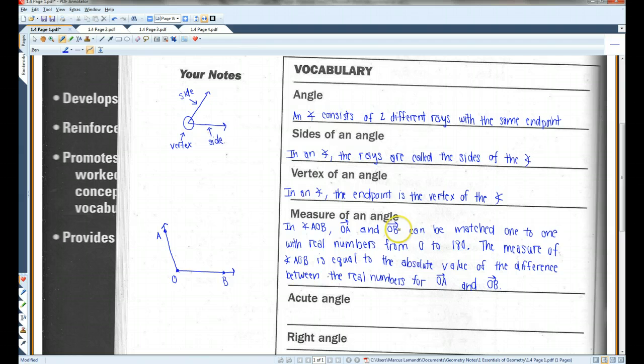Rays OA and OB can be matched one to one with real numbers from zero to 180. Alright, I'm going to attempt to draw a protractor here. This is my attempt at drawing a protractor. Protractors look kind of like this. They have numbers from zero to 180 along the semicircle, 90 being right in the middle. And so when you measure an angle, you can measure it kind of the way you measure a segment with a ruler. We will be doing this activity in class, so for now you can just draw a picture of what I'm talking about.